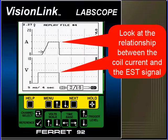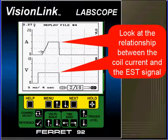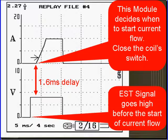Look at the relationship between the coil current and the EST signal. This module decides when to start current flow for the coil. It closes the coil switch. Grounds the coil.